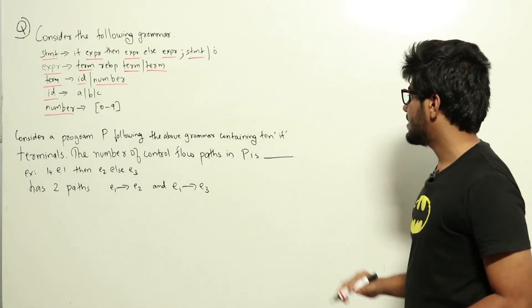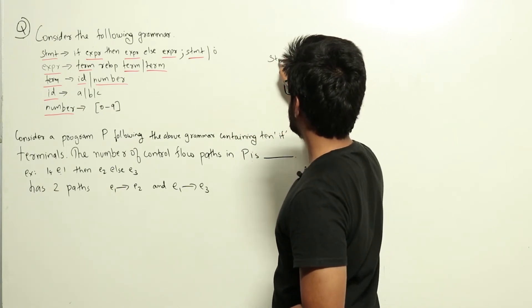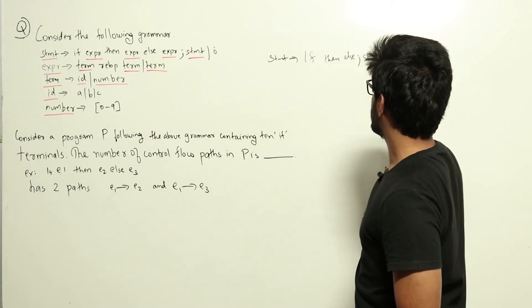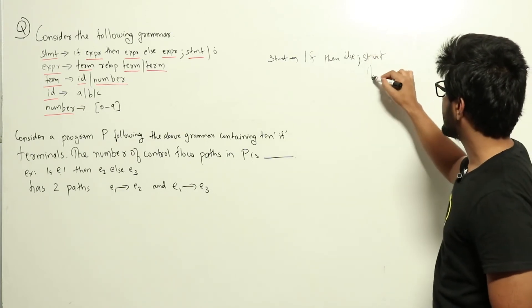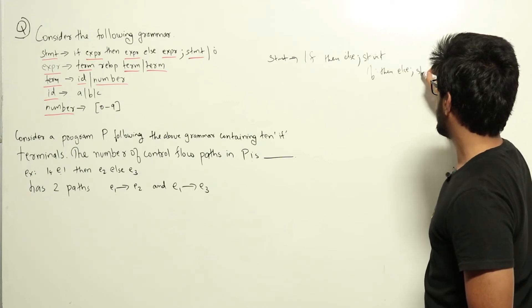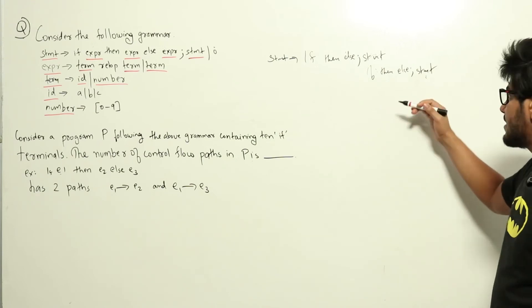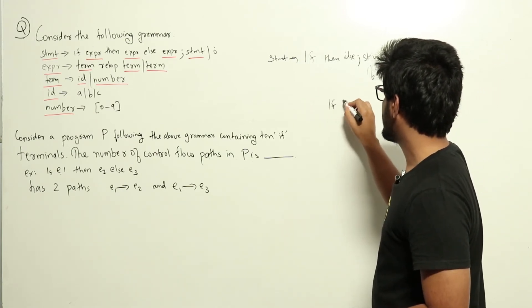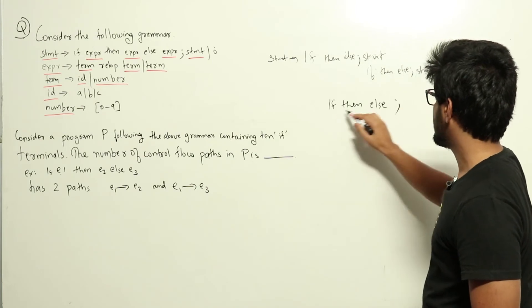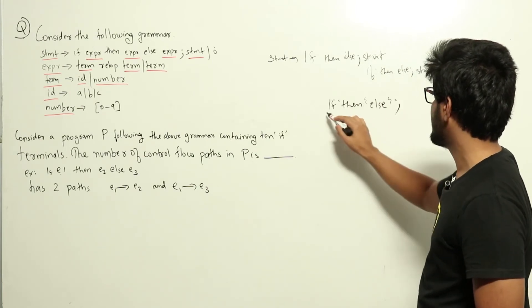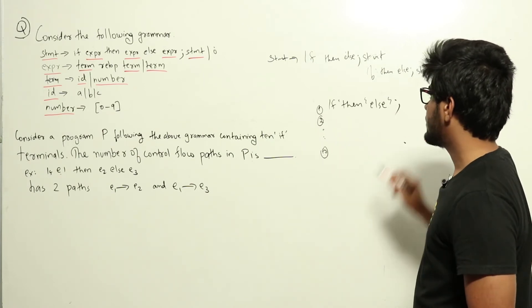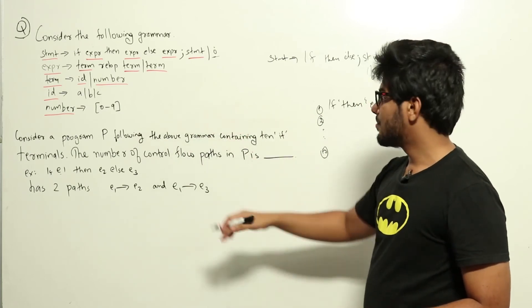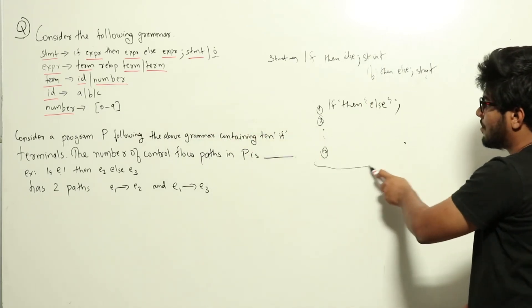With 10 ifs, the only way to achieve that is: statement → if expression then expression else statement, and that inner statement again generates if-then-else statement, and so on, 10 times. So the program looks like 10 lines of if-expression then expression else, with an empty statement at the very end as given in the question.